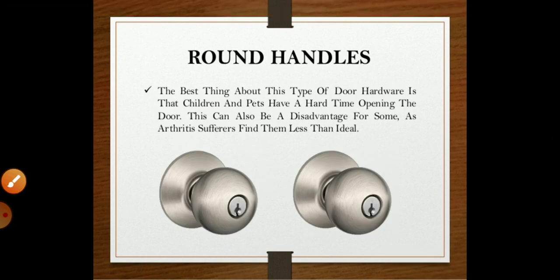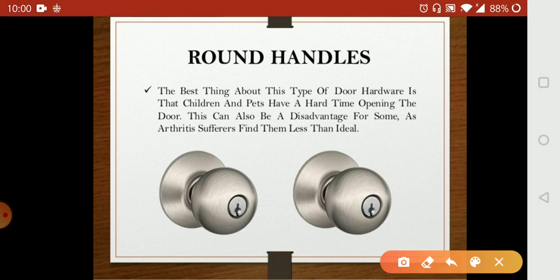The next is the round handle. The best thing about this type of door handle is that children and pets have a hard time opening doors with it. That is why this round handle is used. Round handles are most commonly used.